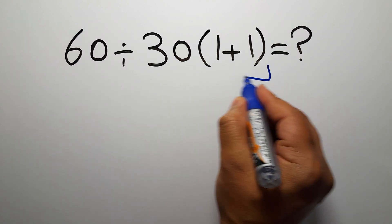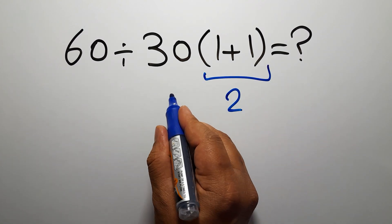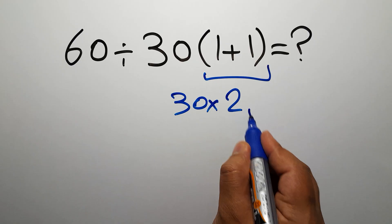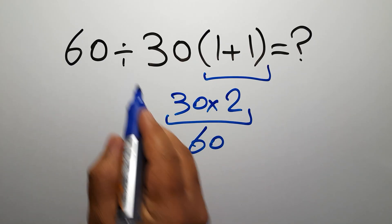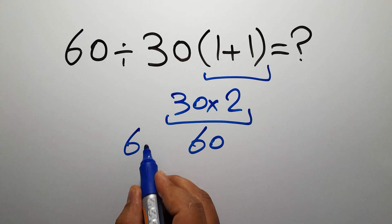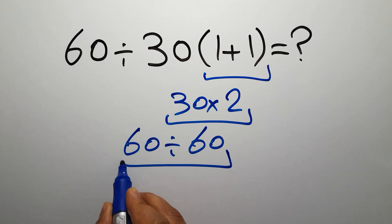1 plus 1 gives us 2 and 30 times 2 gives us 60. 60 divided by 60 which equals 1, but this answer is not correct because according to the order of operations...